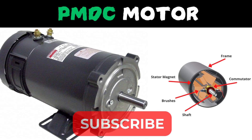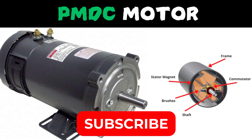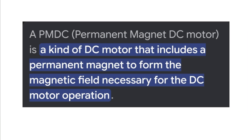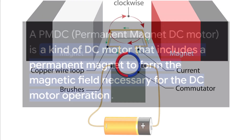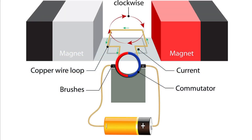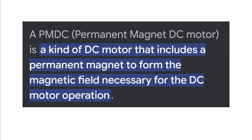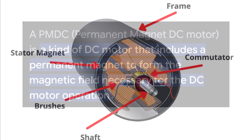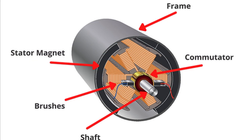Welcome back to another important video. Today we're going to discuss the PMDC motor. PMDC motors are a type of DC motor that uses permanent magnets instead of electromagnets to produce the magnetic field.